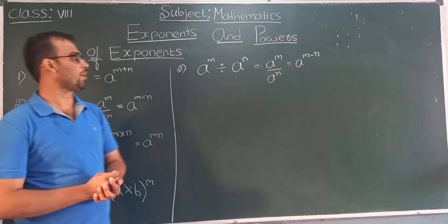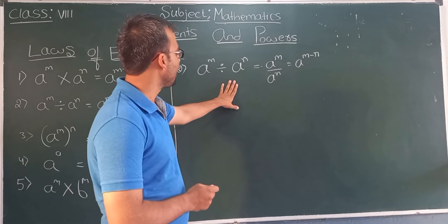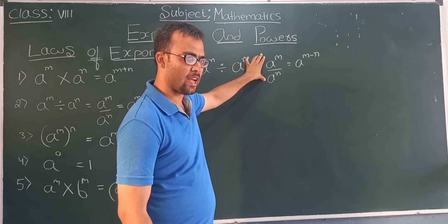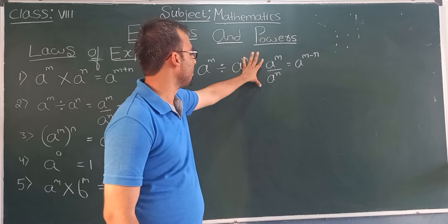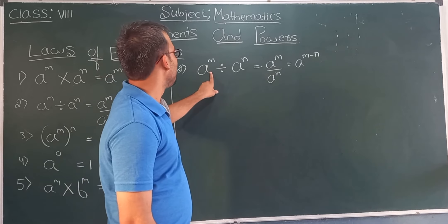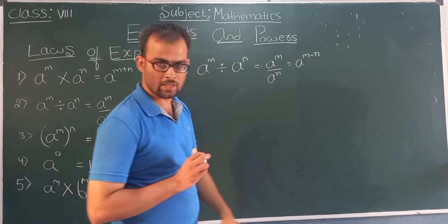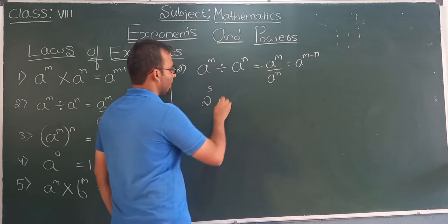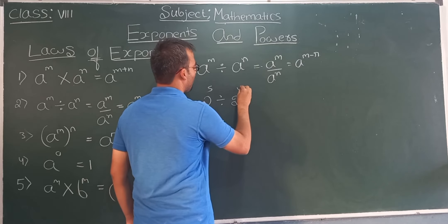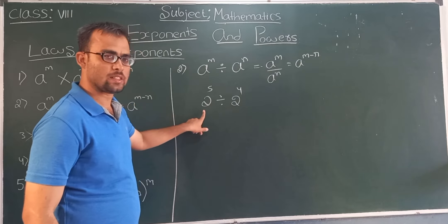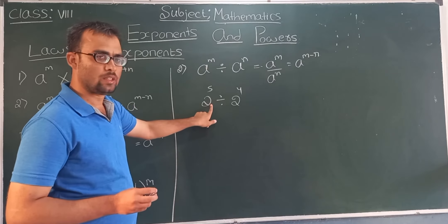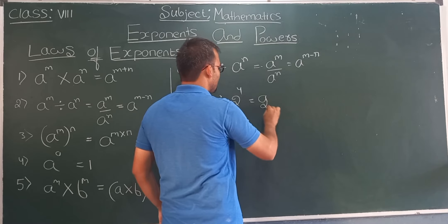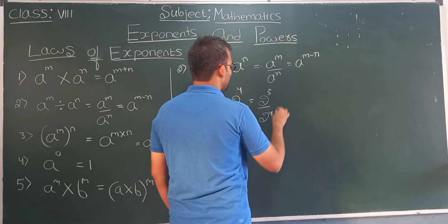Now let us discuss the second law: a to the power m divided by a to the power n equals a to the power m minus n. This division can also be shown as a fraction. For example, 2 to the power 5 divided by 2 to the power 4.